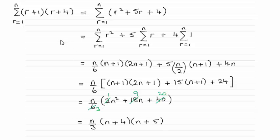In this example we have to show that the sum of (r+1) times (r+4), r going from 1 to n, equals n over 3 times (n+4) times (n+5).